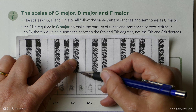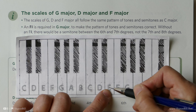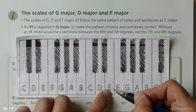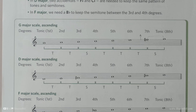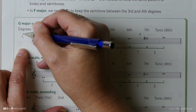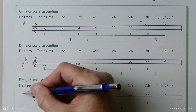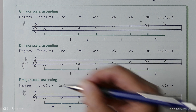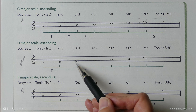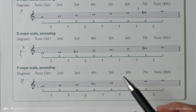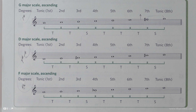Looking at F major — remember we need tone, tone, semitone, tone, tone, tone, semitone, so three to four and seven to eight are semitones. Starting on F: tone, tone, semitone. The B is represented on the stave but it must be flattened. It's a B flat because we're replacing the B, not the A — so we have F, G, A, B flat. There's our semitone at three to four. B flat to C is now a full step — a tone. Then another tone, another tone, and our seven to eight is already a semitone. So F major must have a B flat. It's much easier to just remember these little formulas.